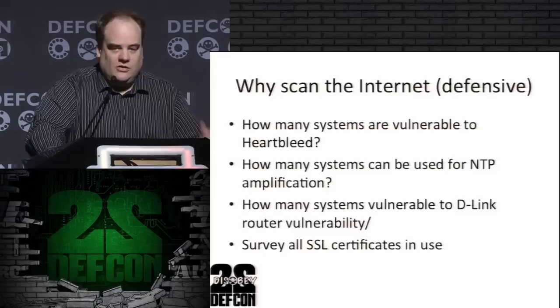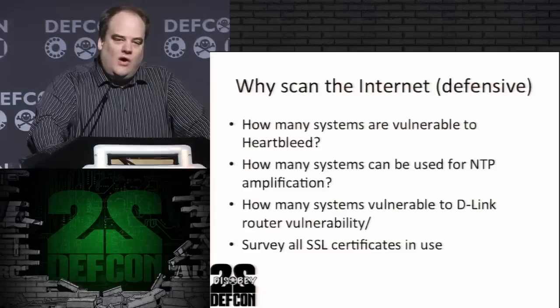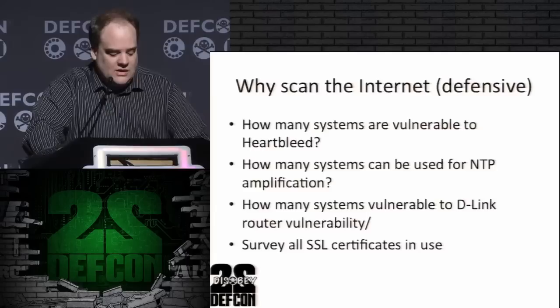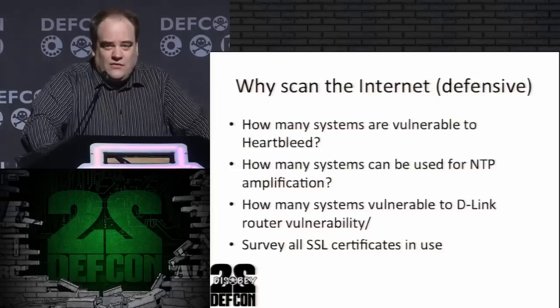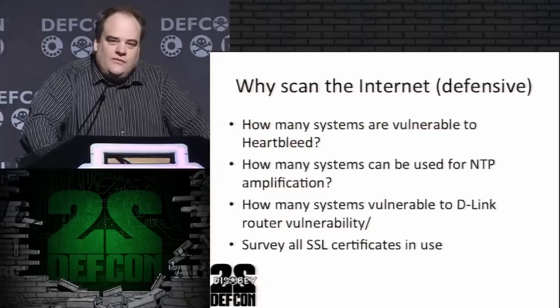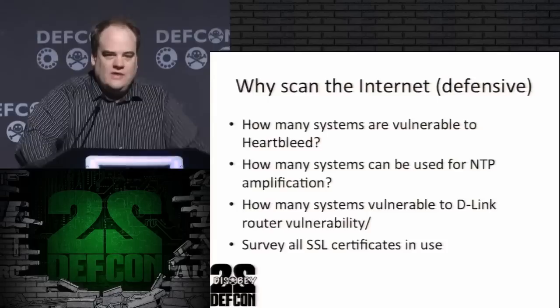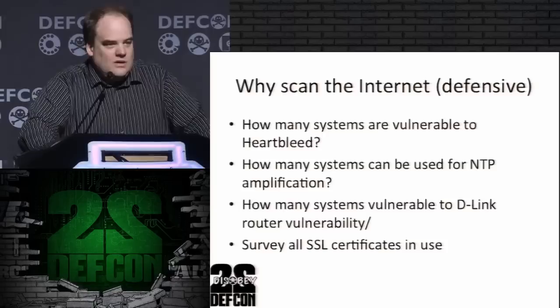We have other really important problems to solve about the Internet right now, like amplification attacks with DDoS that people have been using, such as NTP servers that have been misconfigured. To solve those, we need to scan everything on the Internet to find them. Or when D-Link announces a vulnerability in its home routers, we'll scan the Internet looking for all those D-Link servers to see how big of a botnet problem that presents. Or, with Heartbleed, scan all the SSL certificates in use to see how old they are and if they've been regenerated since the bug.